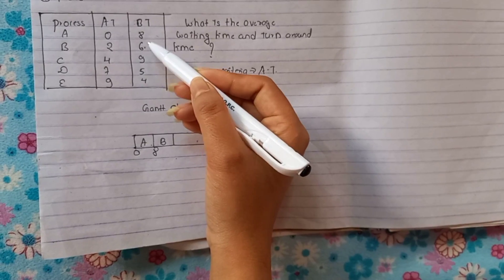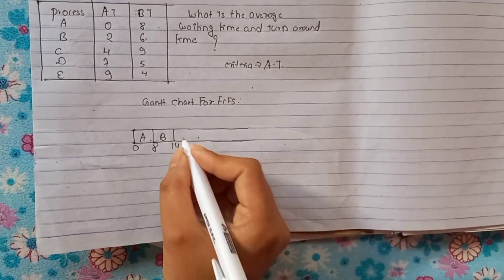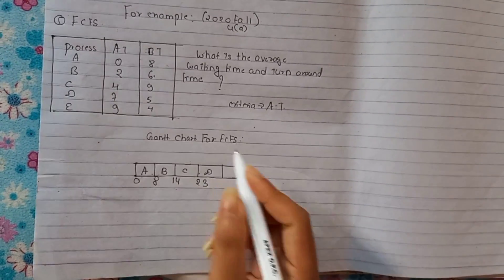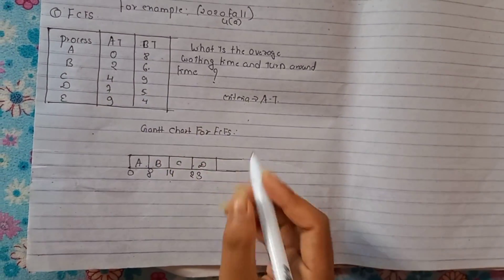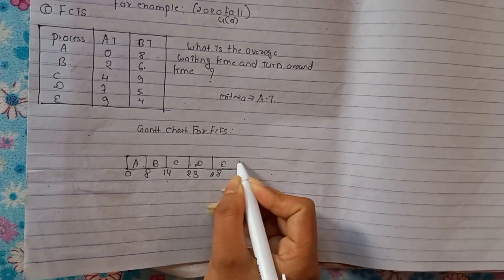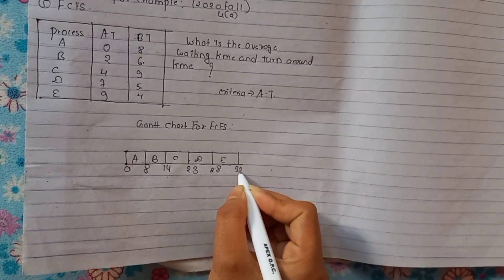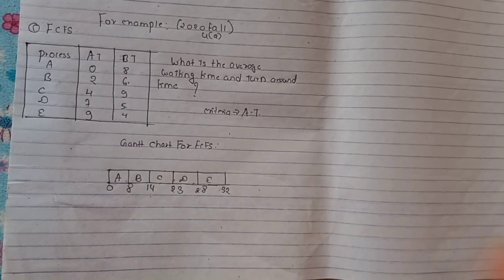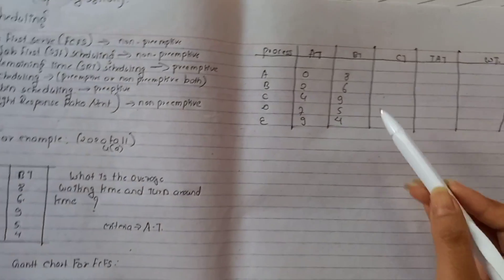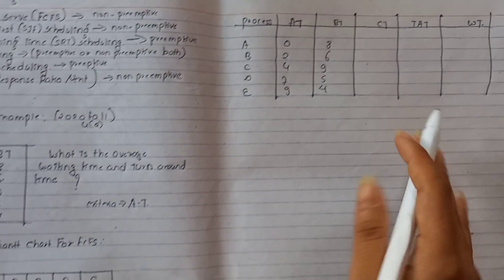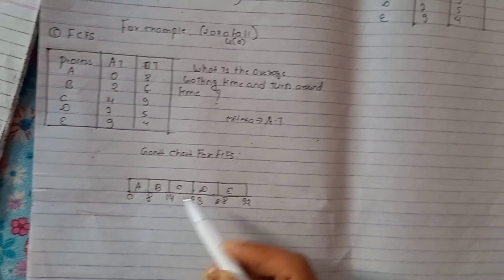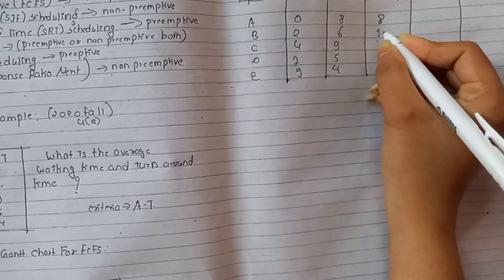For process A, burst time is 8, so completion time is 8. Process B: 8 plus 6 equals 14, so completion time is 14. Process C: 14 plus 9 equals 23. Process D: 23 plus 5 equals 28. Process E: 28 plus 4 equals 32. This gives us the Gantt chart for FCFS.